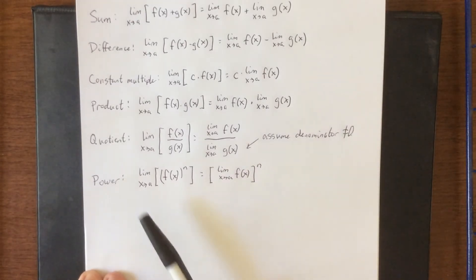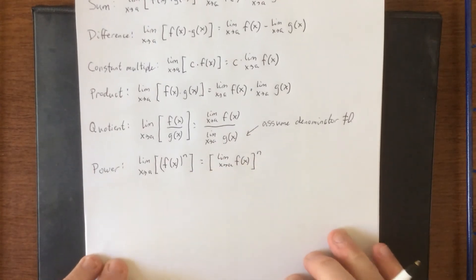So in the event that you have to do a limit and a power, the order in which you do them is irrelevant. You can do them in whatever order you want.